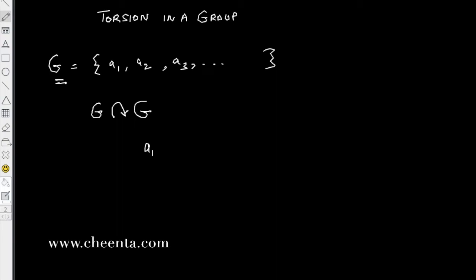The indexing is not really formally correct—we should use some alpha—but let's not go into those intricacies. Suppose a1 is any element of the group. The way we let G act on G is you multiply a1 with a2.